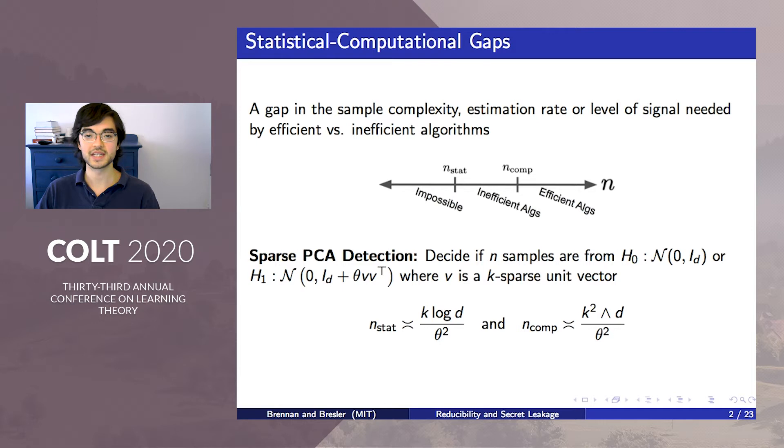For example, in the detection formulation of sparse PCA with n samples and sparsity k, there is a k to k-squared statistical computational gap between the number of samples needed by inefficient and efficient algorithms.